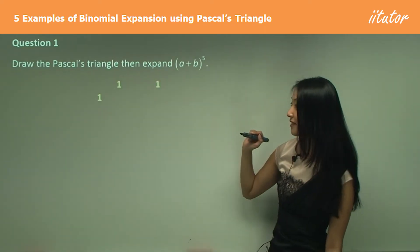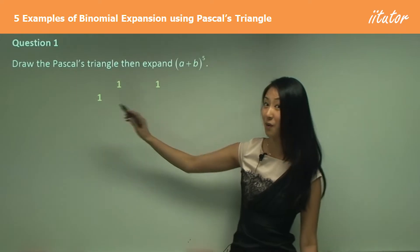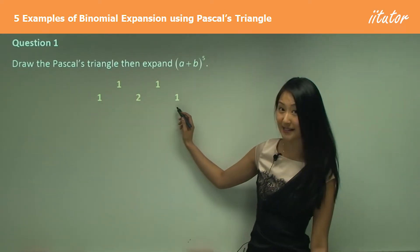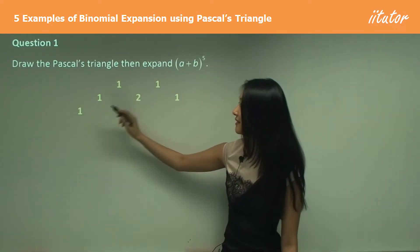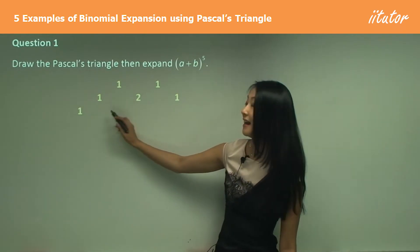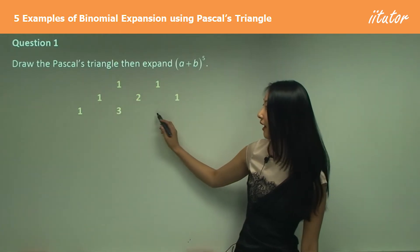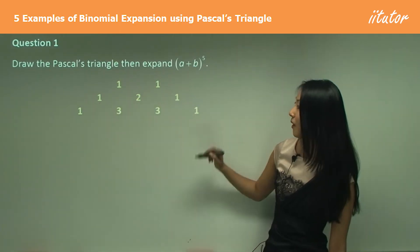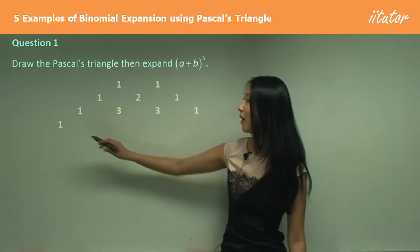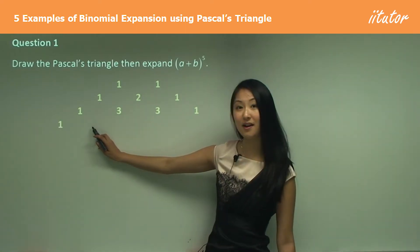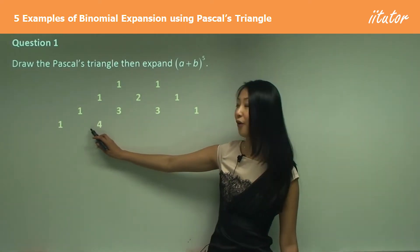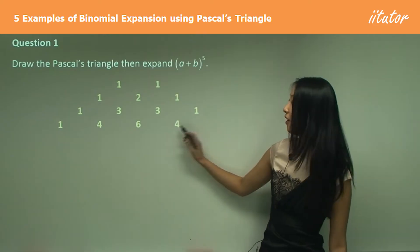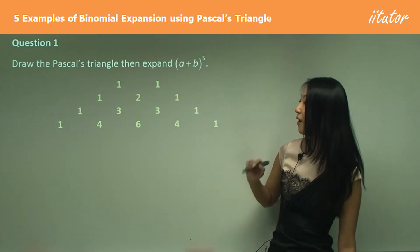So the triangle starts: 1, 1. The next row is 1, 2, 1 — always ends with 1. Starts with 1 again. This will be 1, 3, 3, 1. Next line: 1, 4, 6, 4, 1.